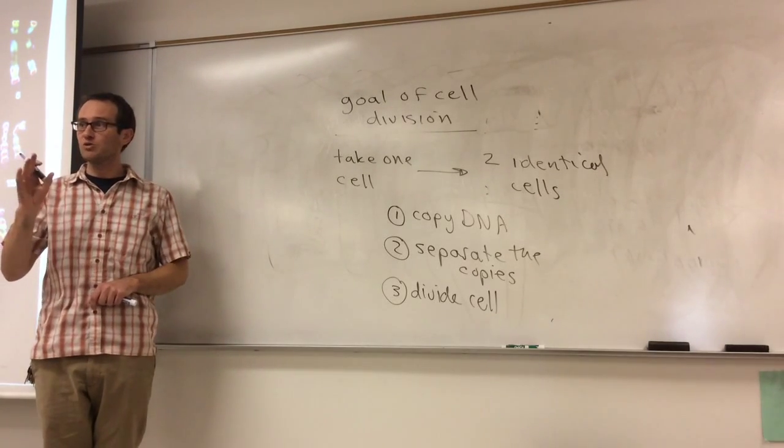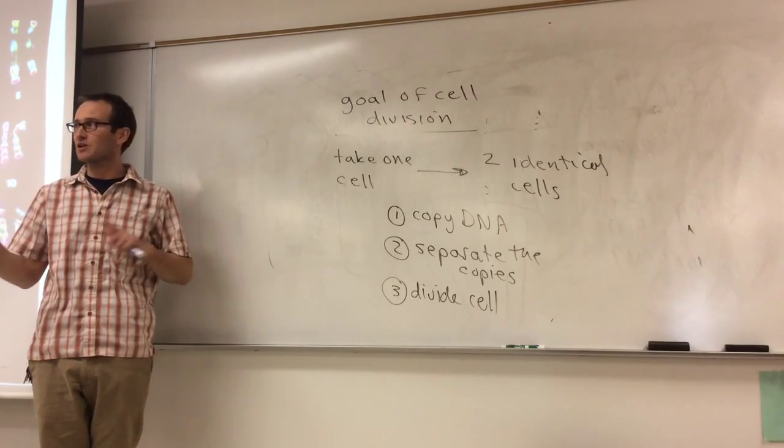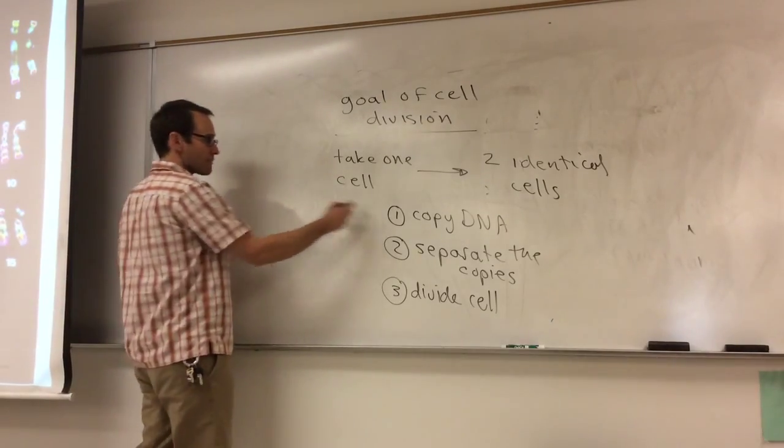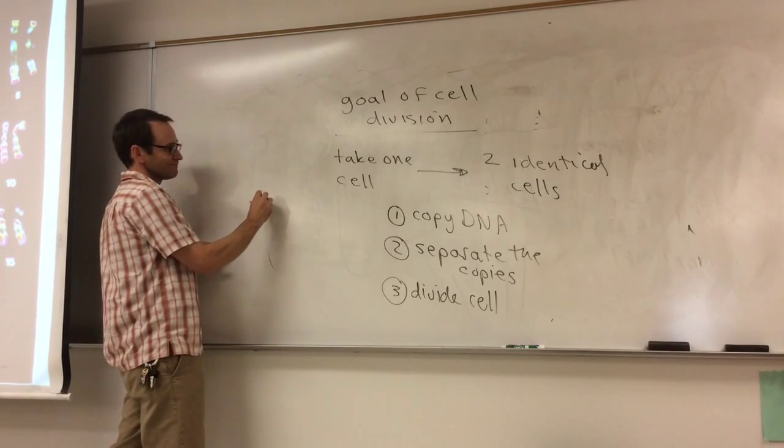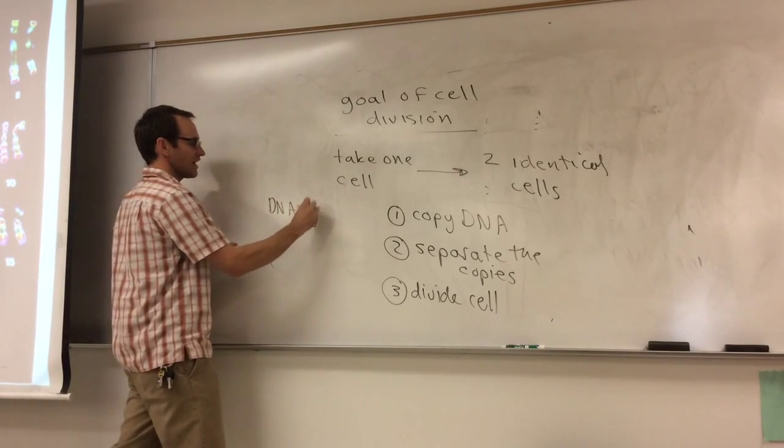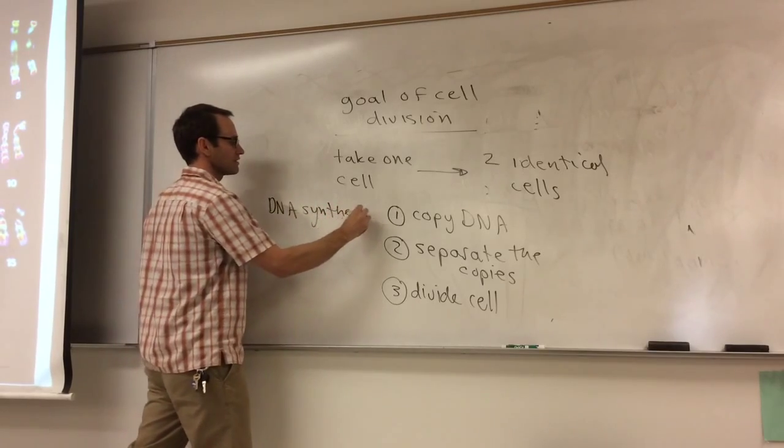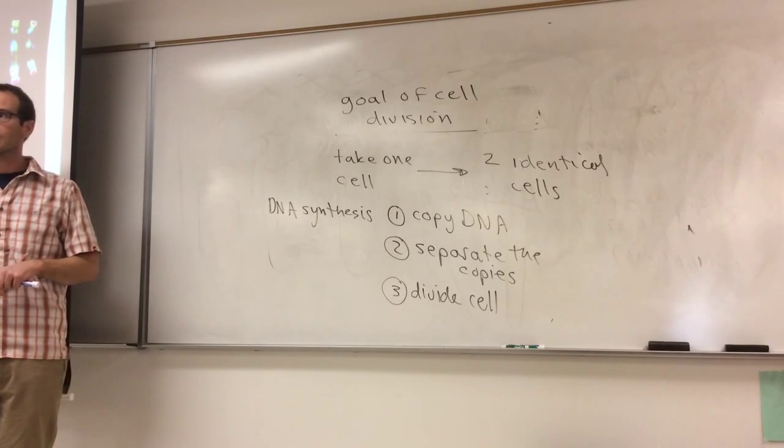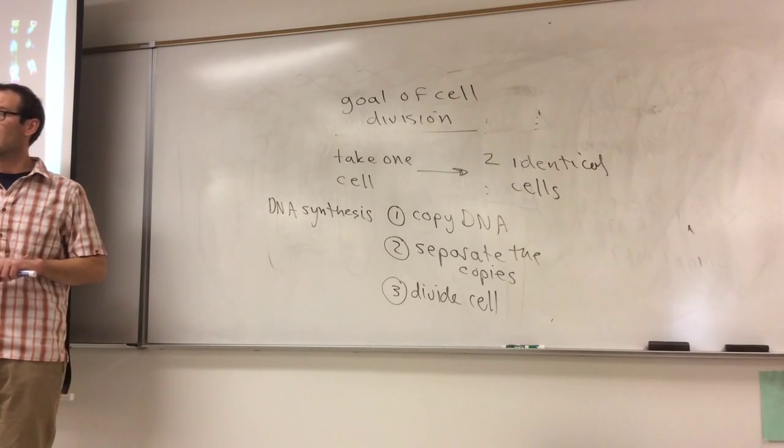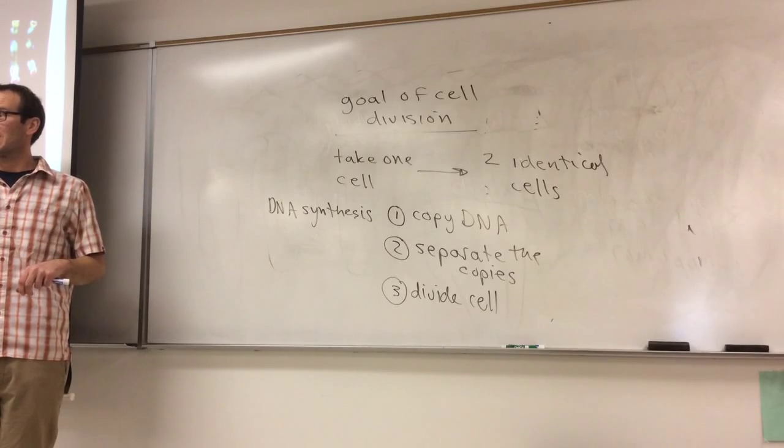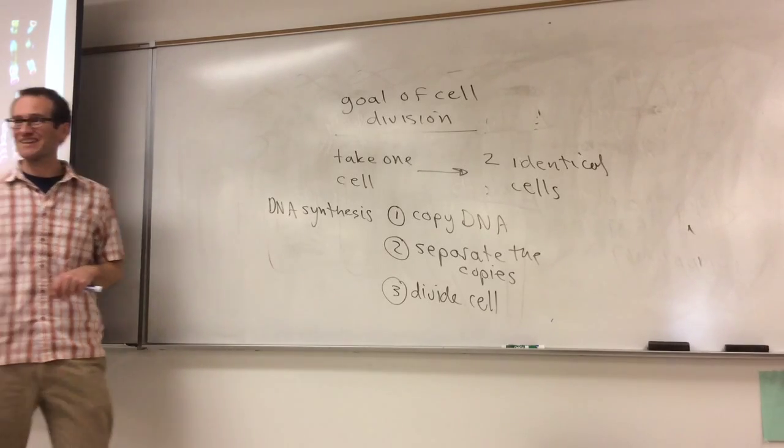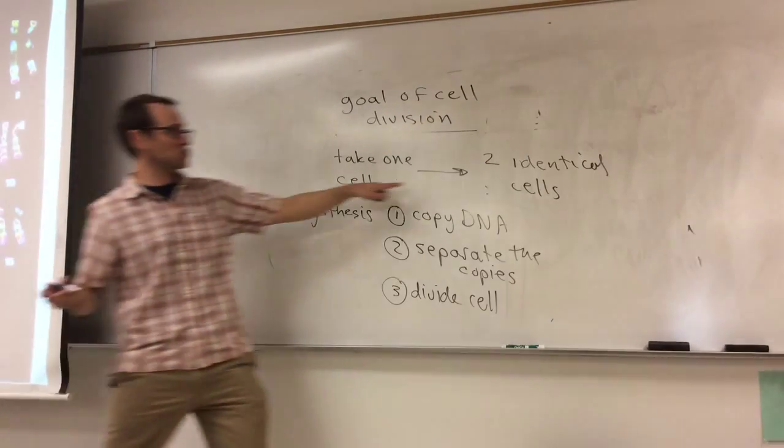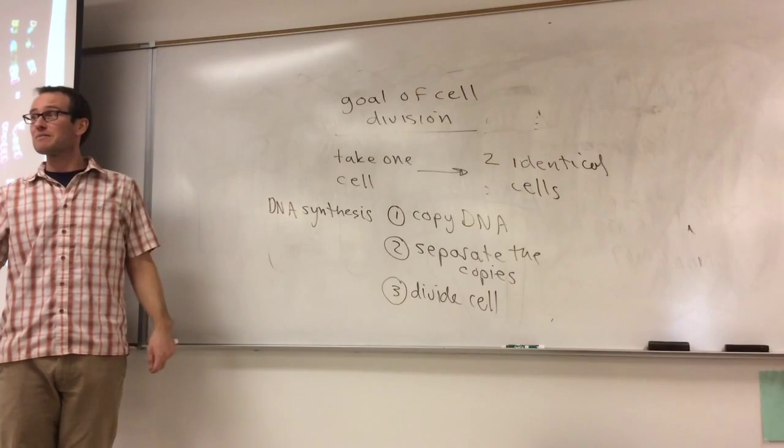And so we use somewhat complicated terminology to refer to these three different steps of cell division. The copy of the DNA we call, it's not too complicated, we can call it DNA synthesis. Guess what term we use to refer to the separation of the copies? Well, for a certain type of cell, yes. But for the cell we're going to talk about here to make two identical cells, it's mitosis.